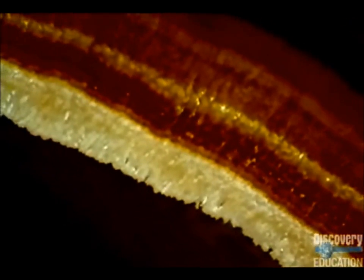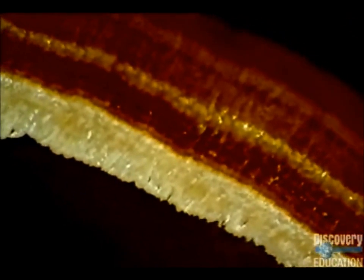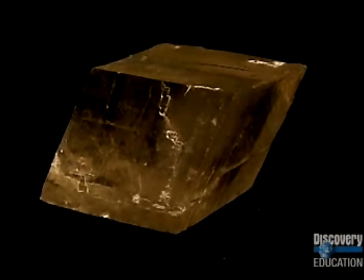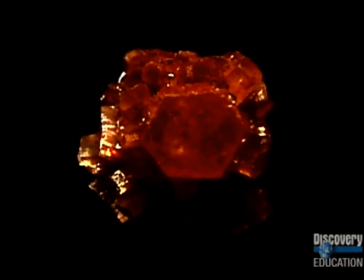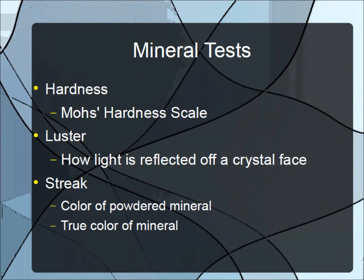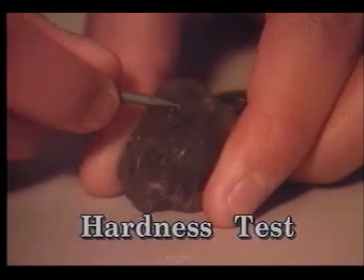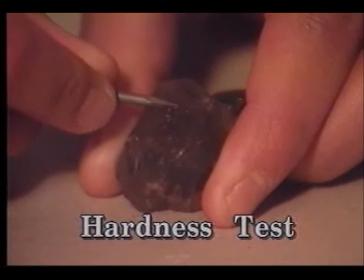Crystals are divided into six patterns, ranging from simple cubic shapes to complex, multi-sided shapes. Depending on how the atoms within a crystal are arranged, a mineral can have very different hardness properties. Hardness is the scratchability of a mineral.